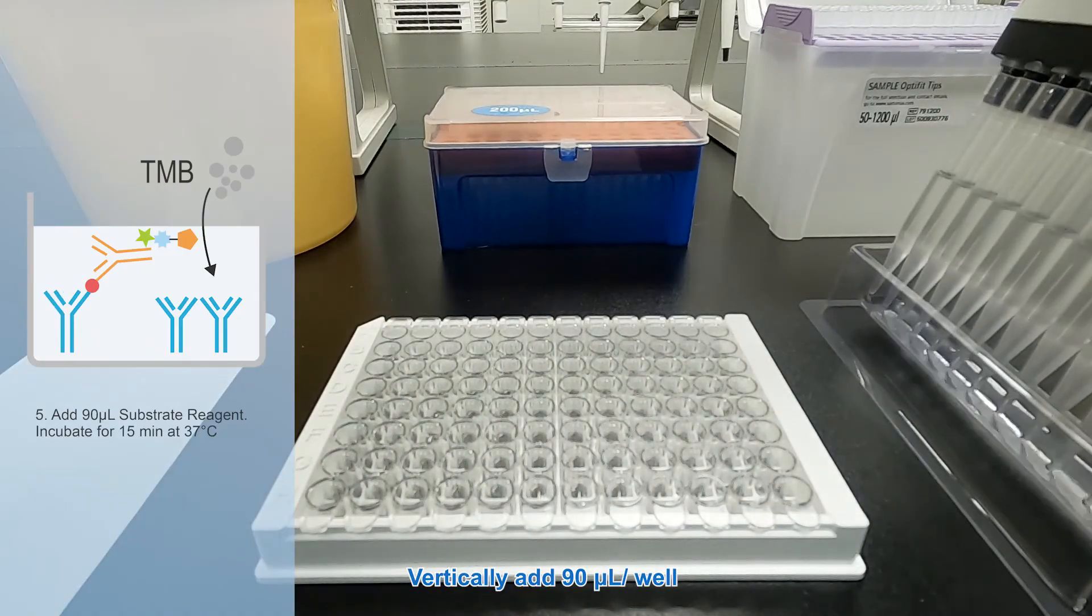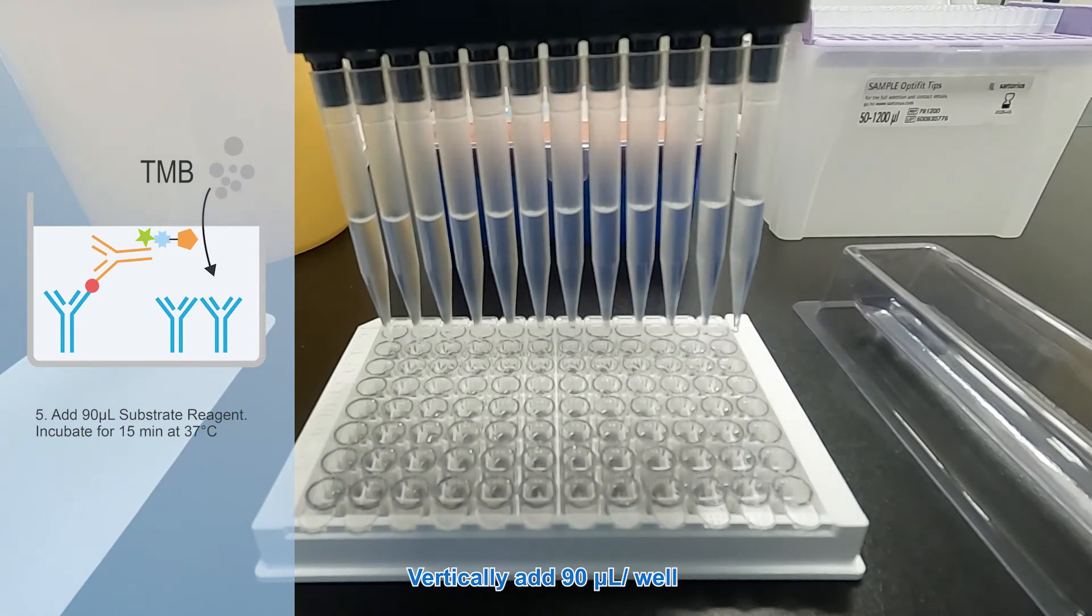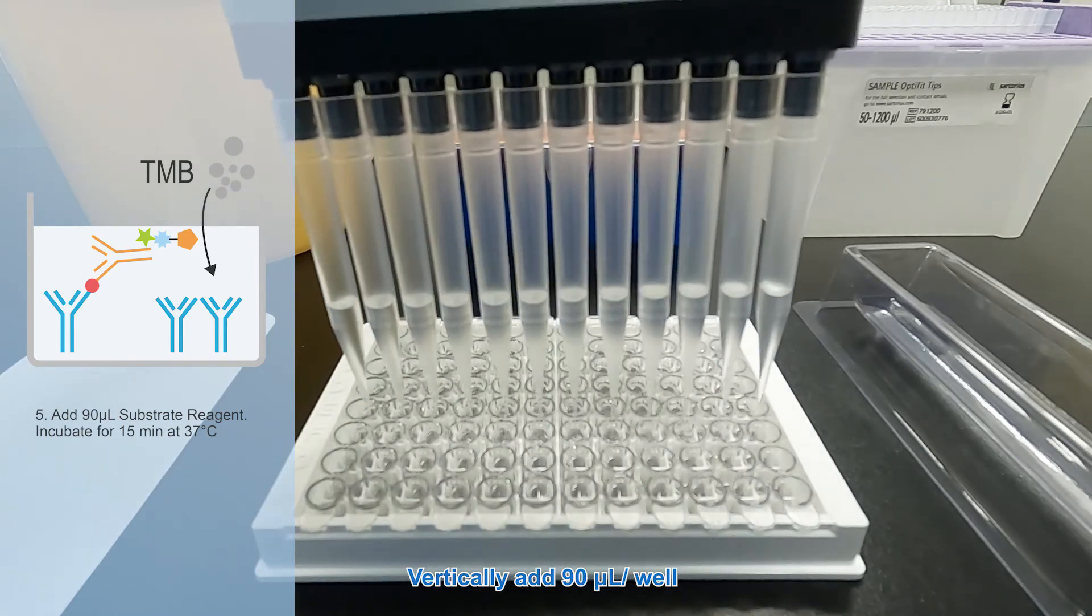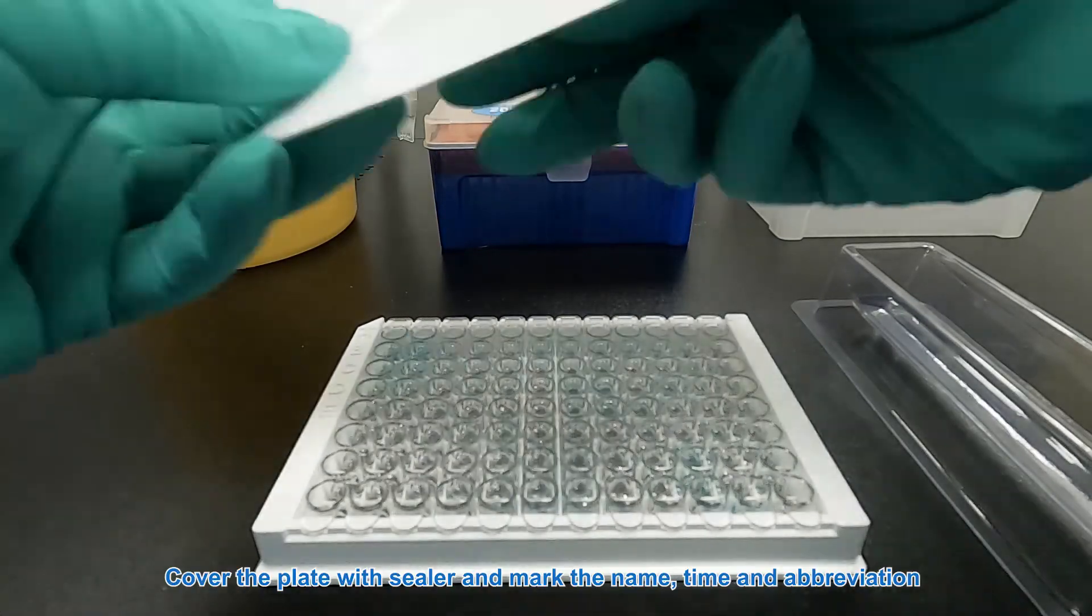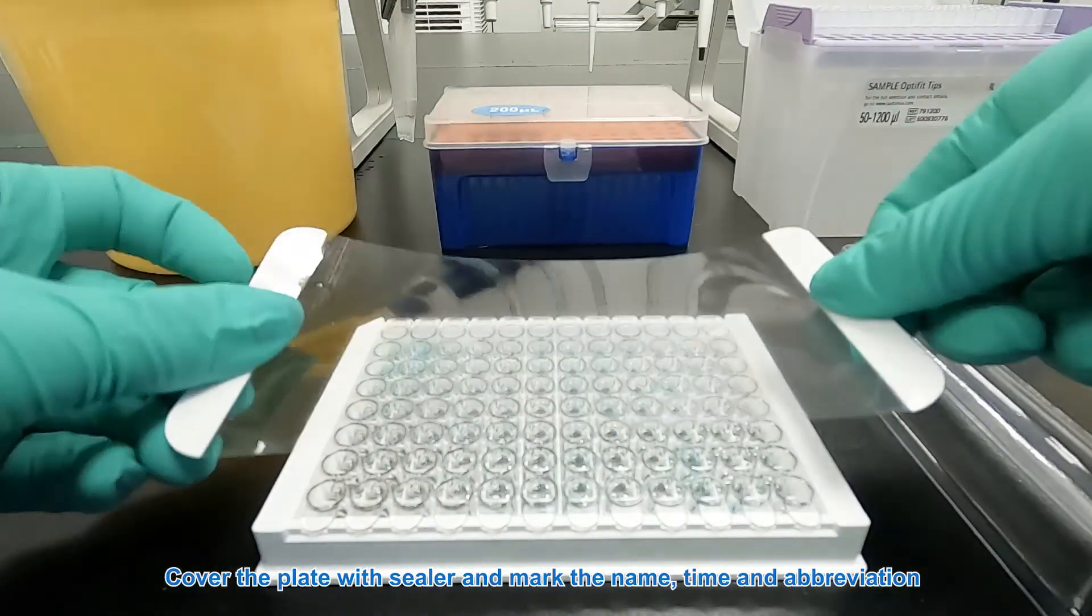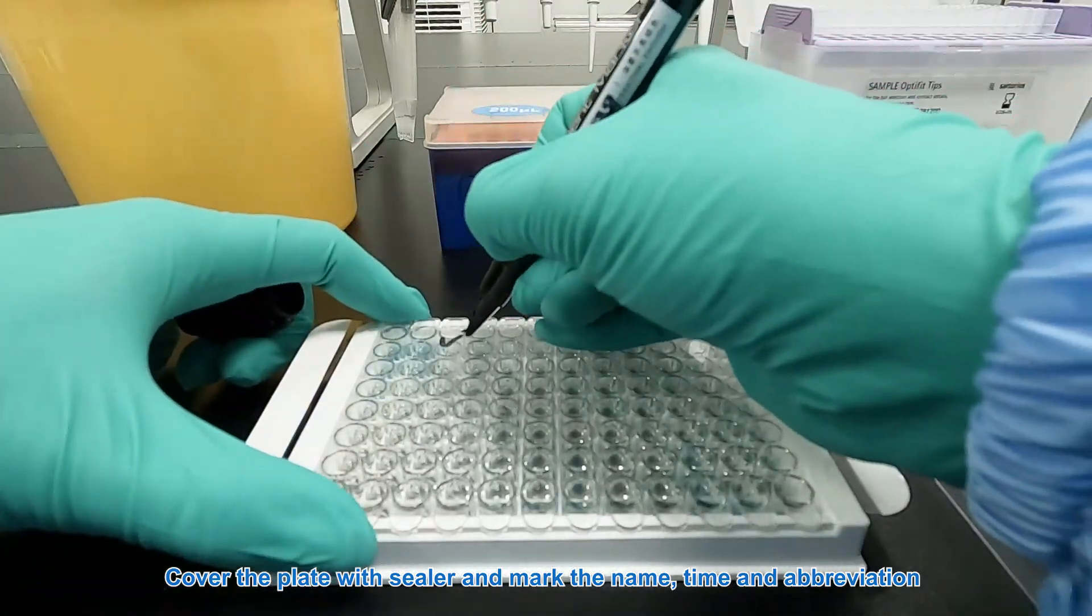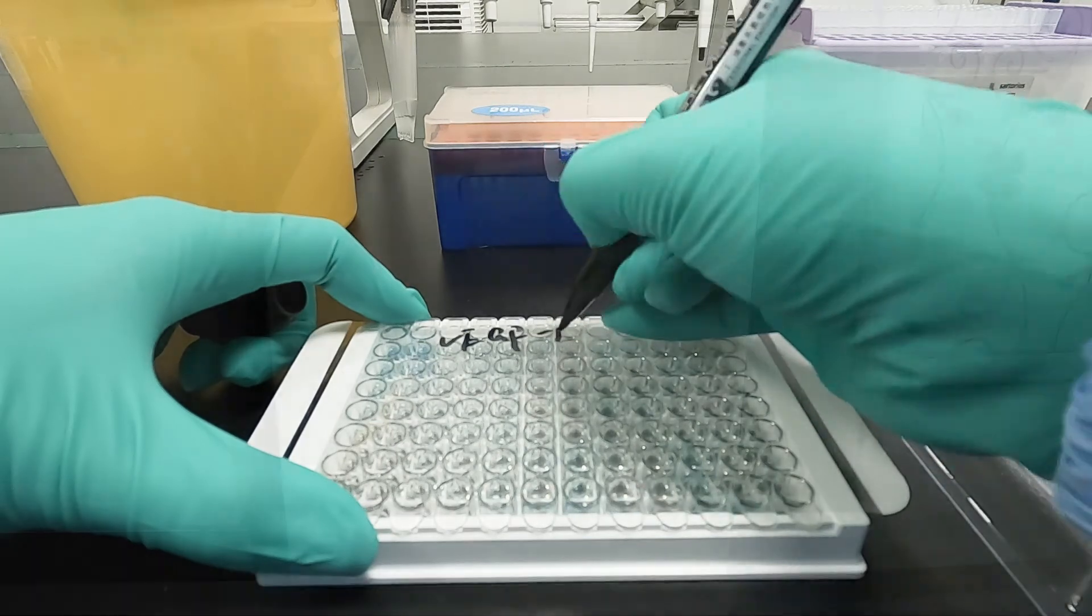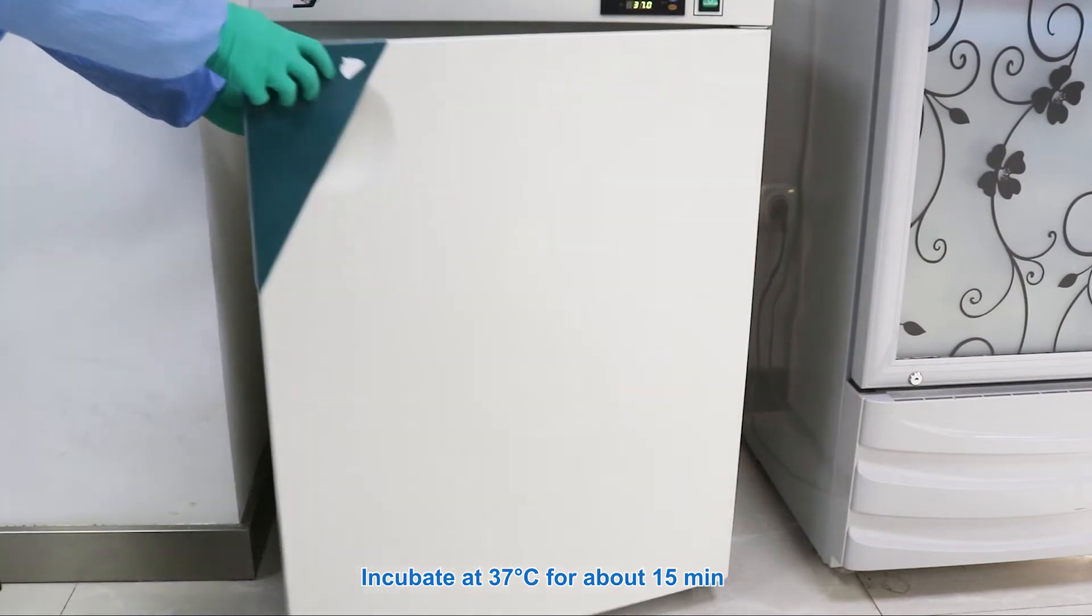Vertically add 100 milliliters per well. Cover the plate with sealer and mark the name, time and abbreviation. Incubate at 37 Celsius degrees for about 15 minutes.